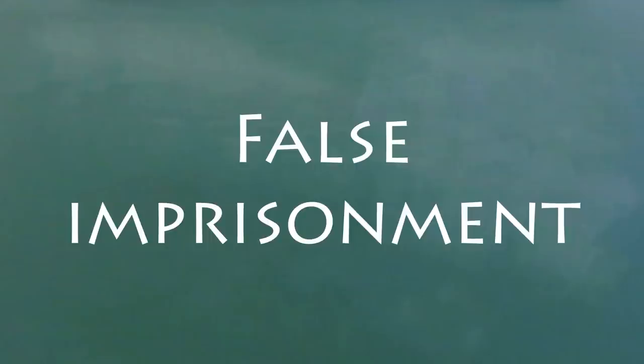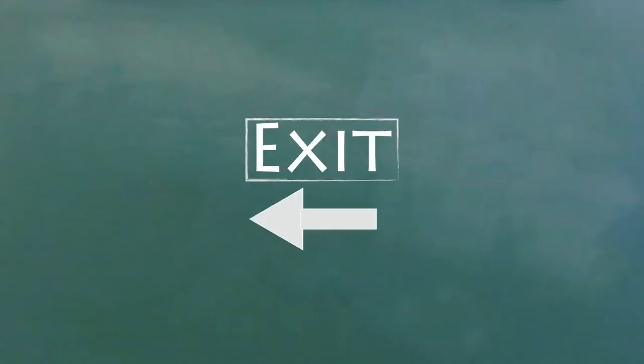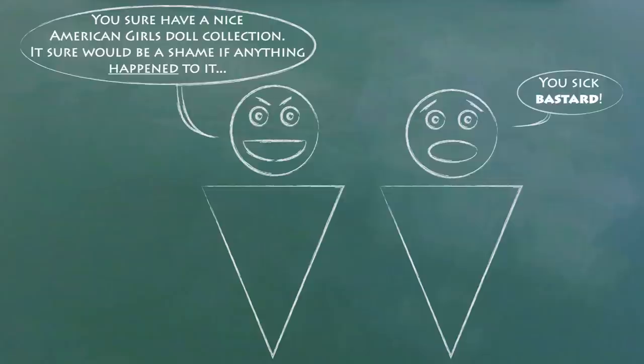False imprisonment is where you confine someone against their will. The confinement has to have definite physical boundaries, and the trapped person can only sue for false imprisonment if there are no reasonable means of escape. I said reasonable means of escape. You can even be falsely imprisoned if the only thing holding you there are threats of harm in the near future.